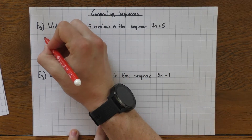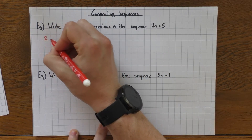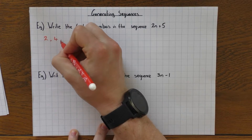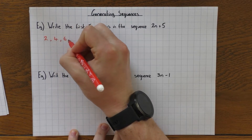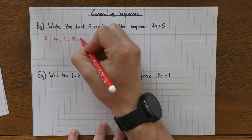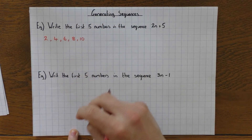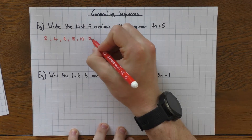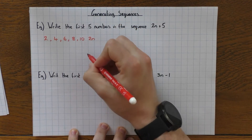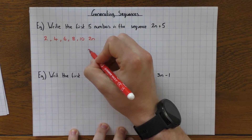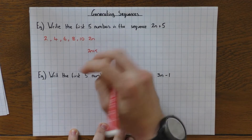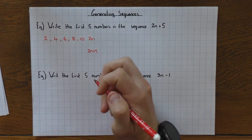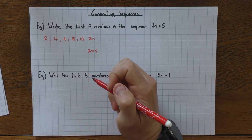The nth term here is 2n plus 5, and the question wants the first 5 numbers in the sequence of 2n plus 5. So 2n just means the 2 times table, and then we add 5. So let's just do that. We've got 2n, which is the 2 times table: 2, 4, 6, 8, and 10.